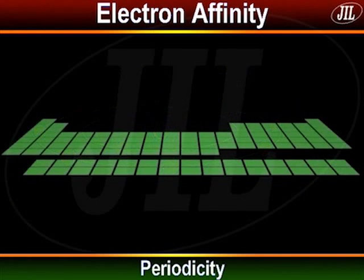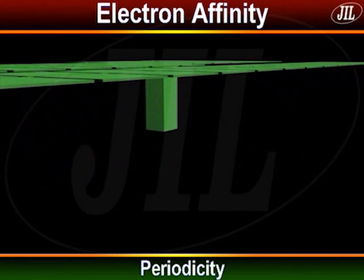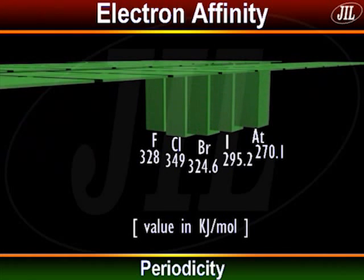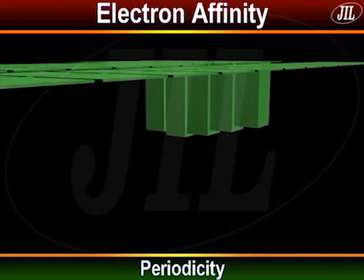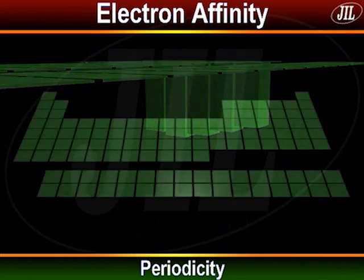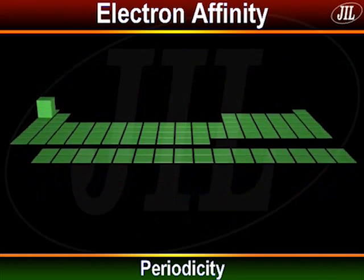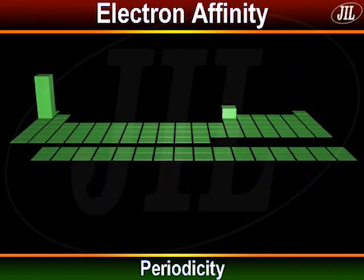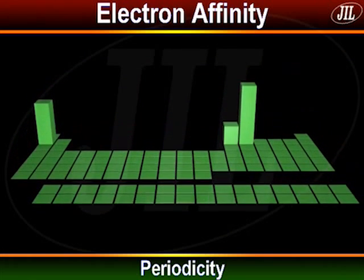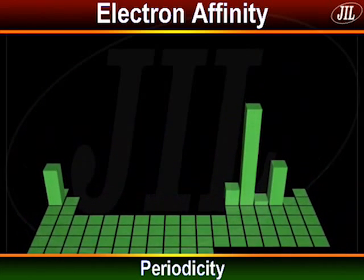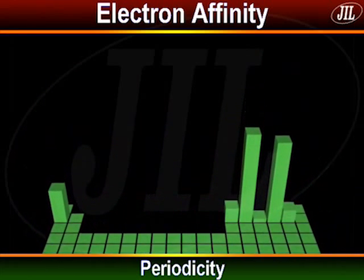Electron affinity decreases from top to bottom in a group and increases from left to right in a period. Have a look at the values to understand it in a better way.